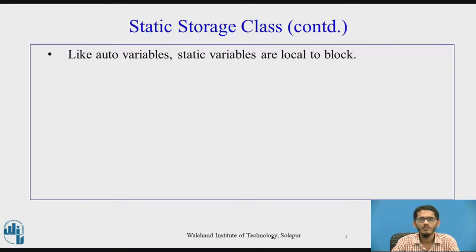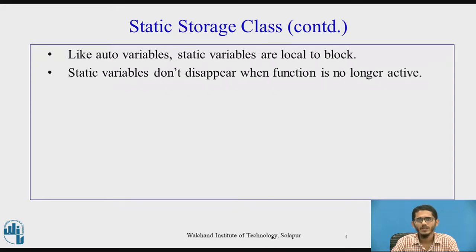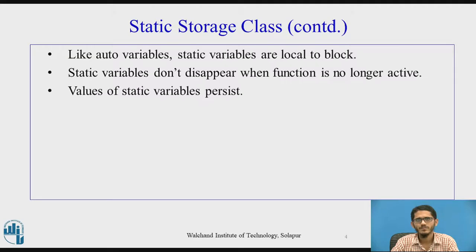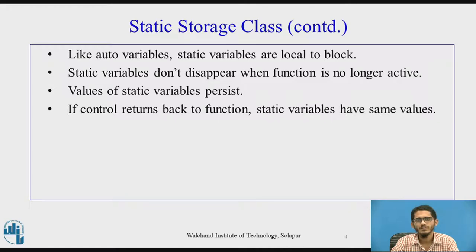Like auto variables, static variables are also local to the block in which the variable is defined. The static variables don't disappear when the function is no longer active, meaning if the control of execution has left the function, the values of the variable will still be preserved. If the control returns back to the function, the static variables have the same values as when the control of execution had left that function.